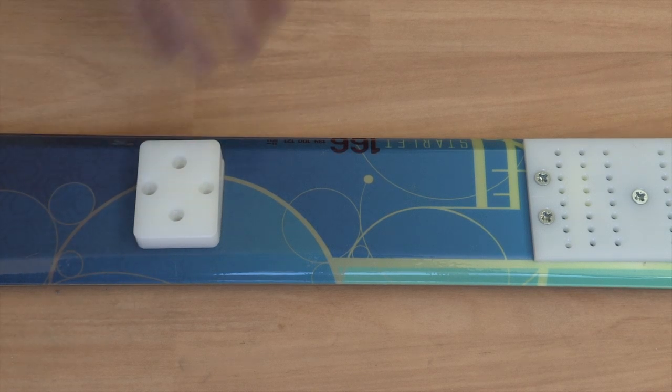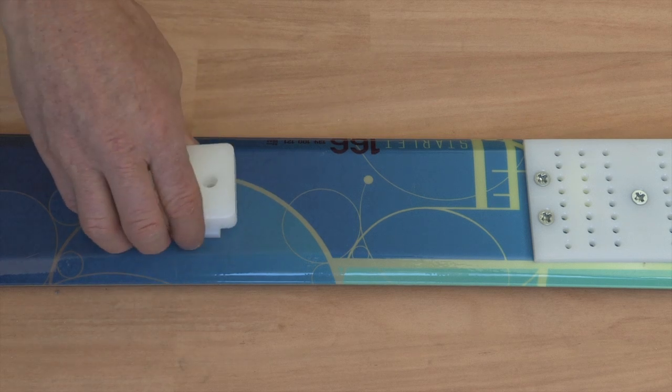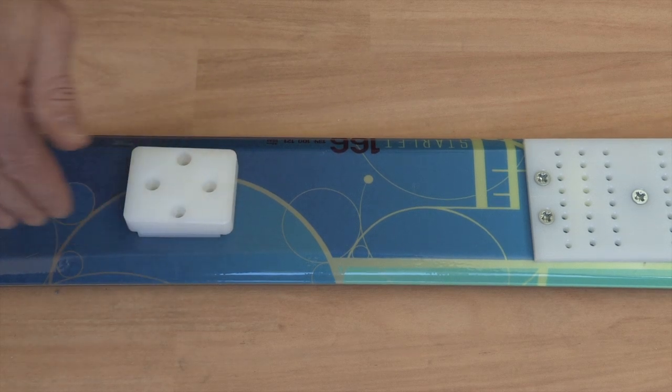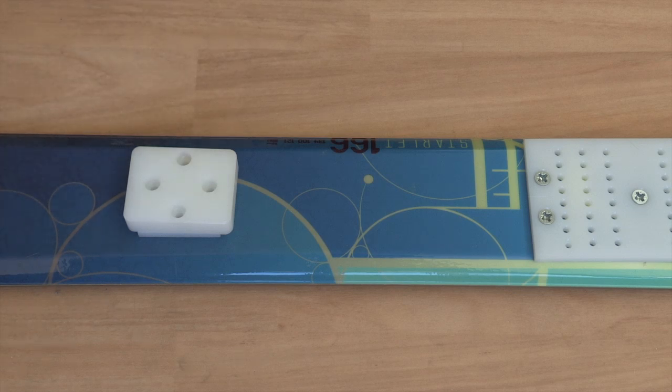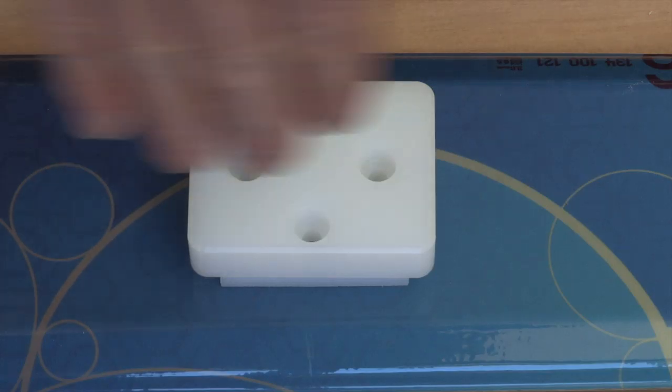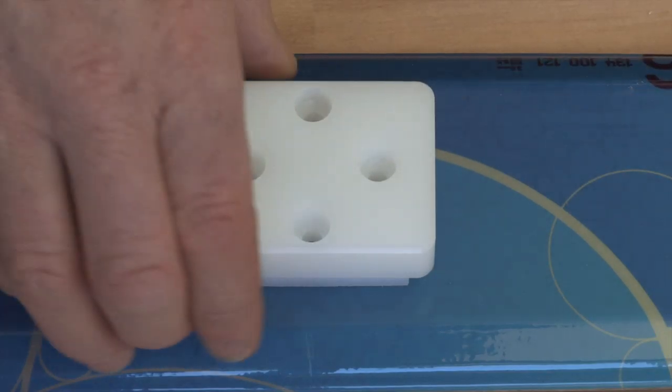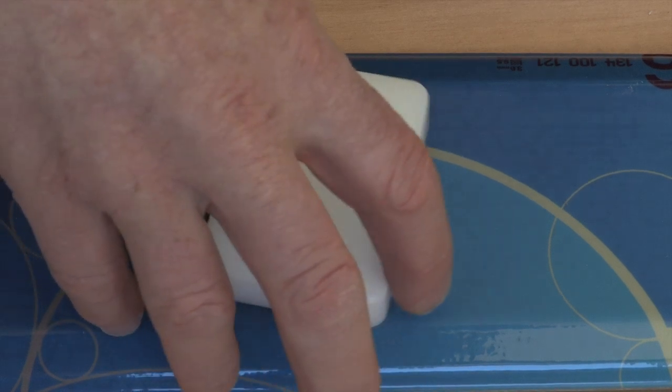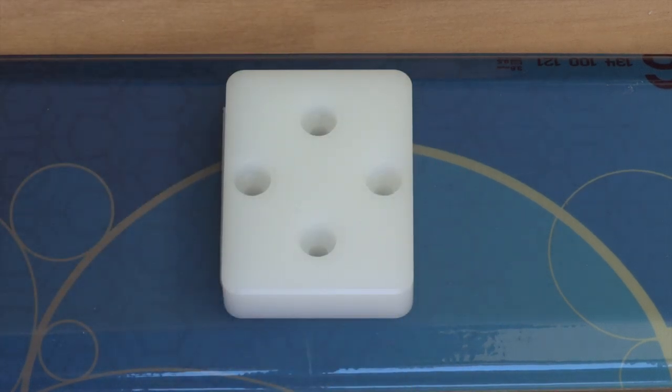It's important to mount the heel plate in the correct orientation for your model. For NP bindings, the long axis of the heel plate must be aligned parallel to your ski. And for oversized bindings, the long axis of the heel plate must be aligned perpendicular to the ski.